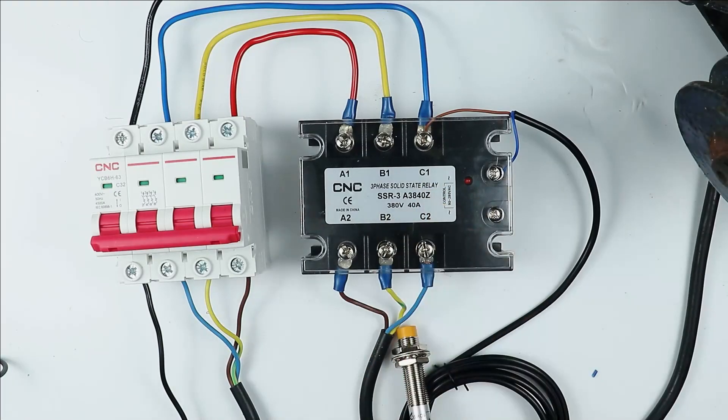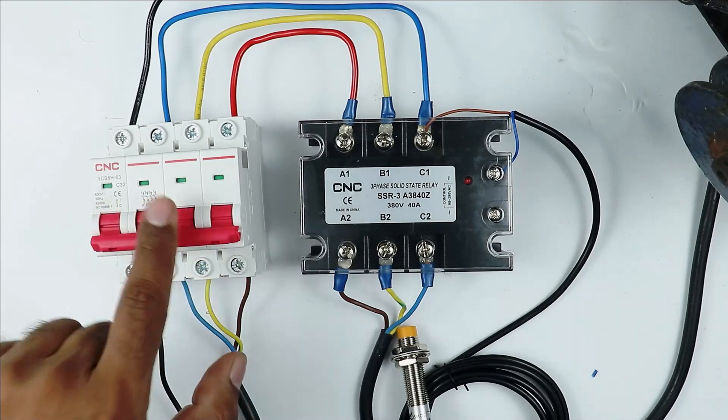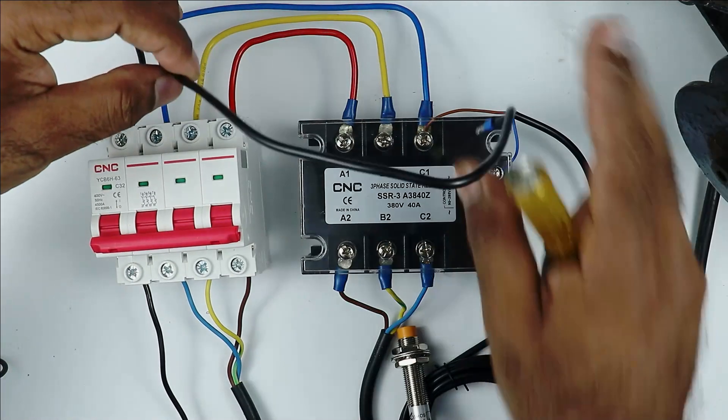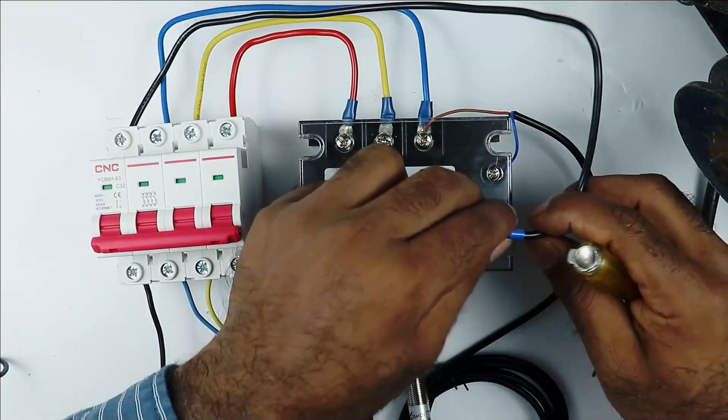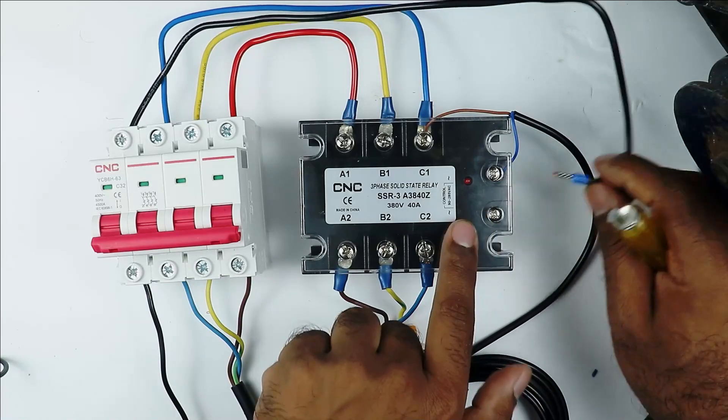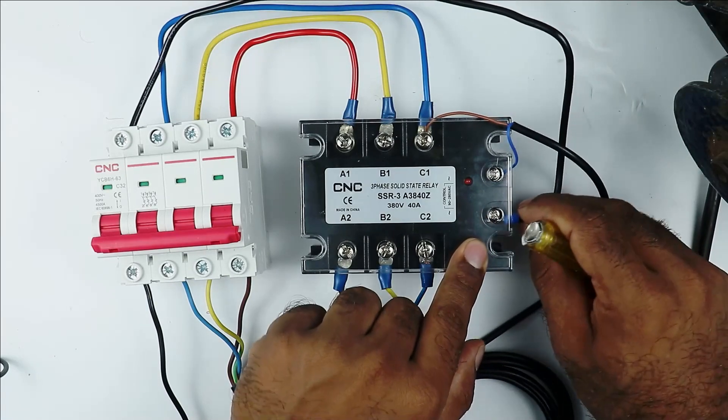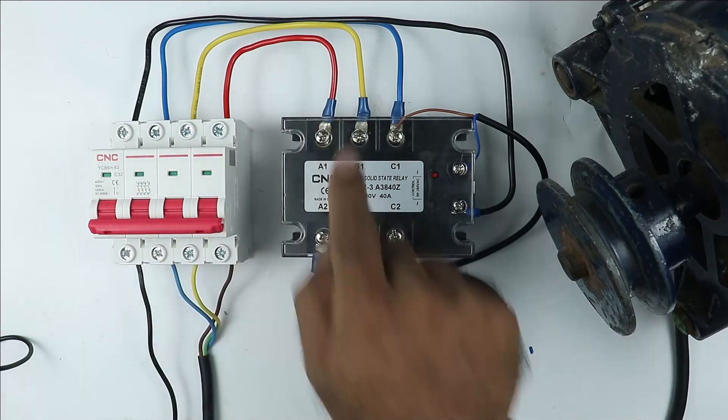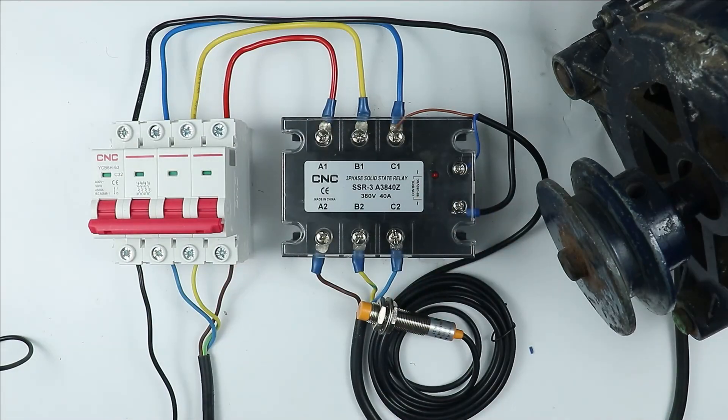To operate this relay we also need to provide neutral power supply. For this in this MCB where the neutral terminal is present connect one wire with that terminal and take the other end of the wire and in this relay at the second terminal connect the wire with this terminal. To operate this relay power wiring and control wiring both are completed.